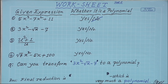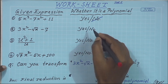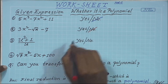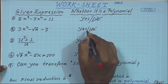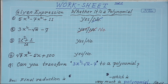For the second expression, it is not a polynomial. Because for the second term, root x is x to the power half, and half does not belong to the set of whole numbers. That is why this is not a polynomial.